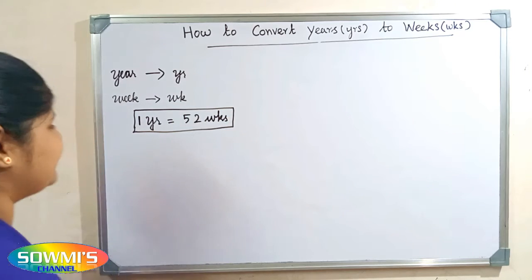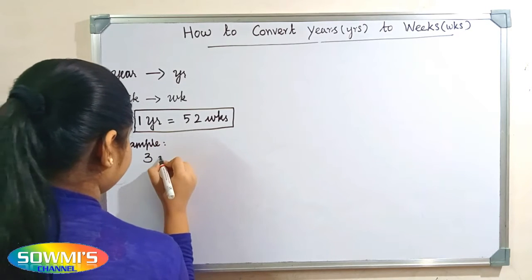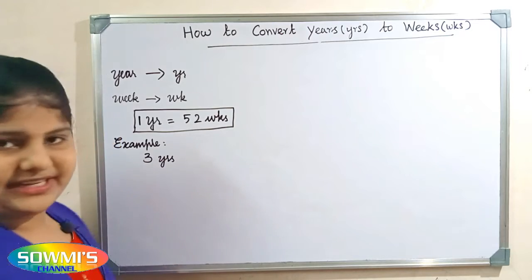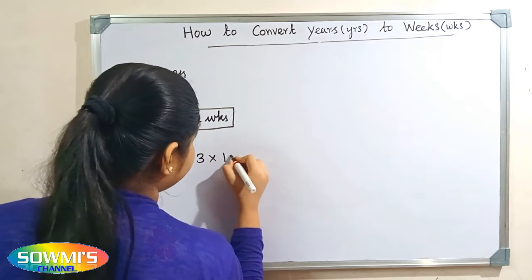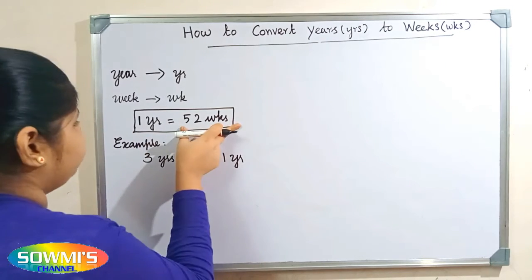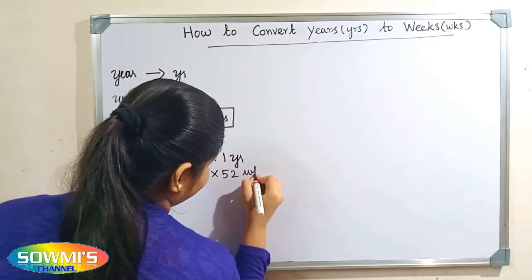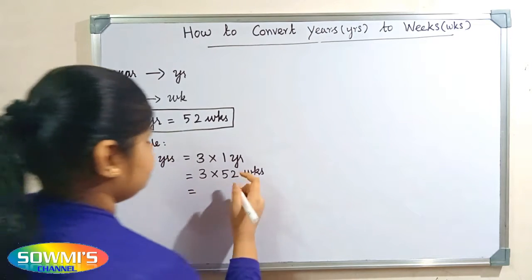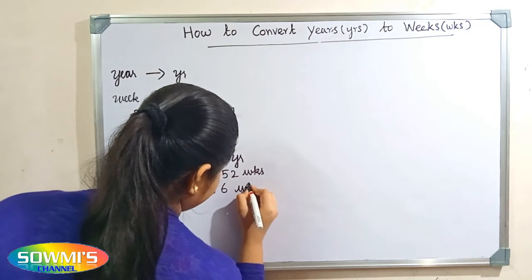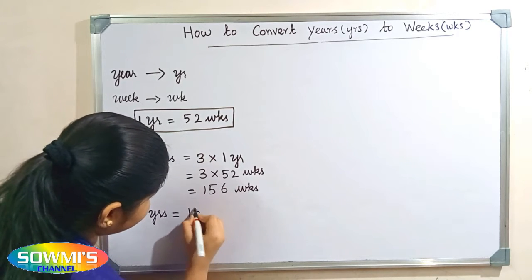Now we will take some examples. For example, we can take three years. So how many weeks are there in three years? Three years can be written as three multiply one year. Now we will apply the formula and substitute 52 weeks in place of one year, so three multiply 52 weeks. Two threes are six, five threes are fifteen, so 156 weeks. Therefore, three years is equal to 156 weeks.